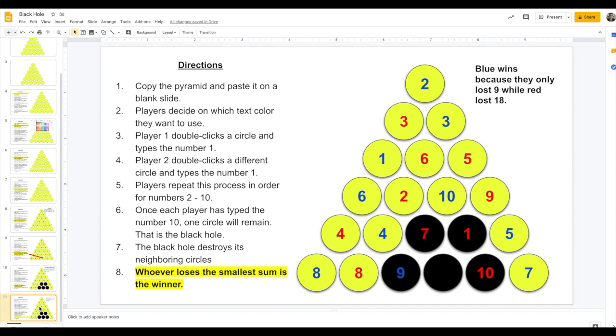And now you've seen which numbers were destroyed, and players will then add up their numbers and the one with the lower score that was destroyed. So in this case, blue only lost 9, and red lost 18. So blue wins because they lost the least amount. That's how it's played.